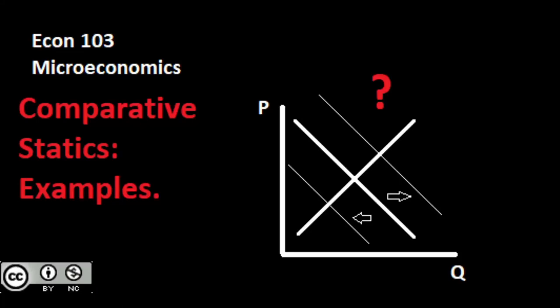We've had a lot of questions come up regarding comparative statics - how exactly do we work through this? Did it affect the supply? Did it affect the demand? Why is this a demand shift? Why did it go to the right or to the left? In this video, we're going to rehash and focus specifically on comparative statics, work through a whole bunch of examples, and set a good framework to adopt in order to work through this effectively.